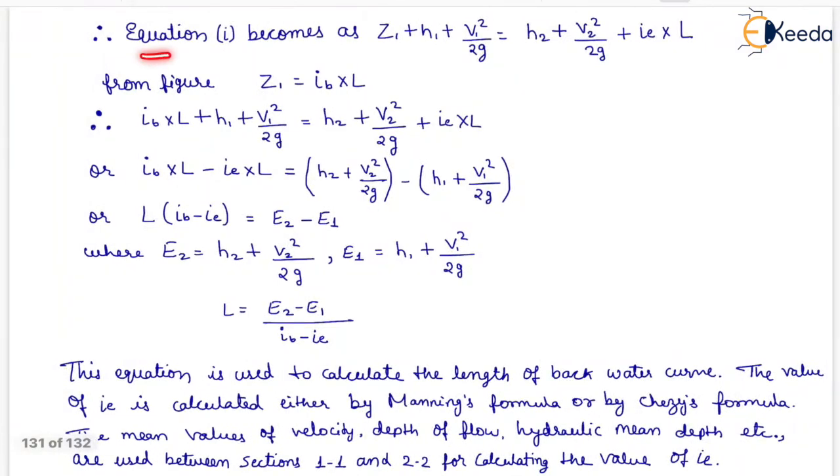Therefore equation 1 becomes Z1 plus H1 plus V1 square upon 2G equals H2 plus V2 square upon 2G plus iE into L. From figure Z1 equals iB into L. Therefore iB into L plus H1 plus V1 square upon 2G equals H2 plus V2 square upon 2G plus iE into L. Therefore the complete solution will be L into iB minus iE equals E2 minus E1.